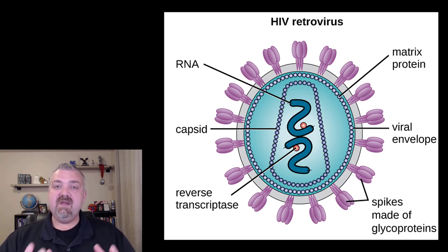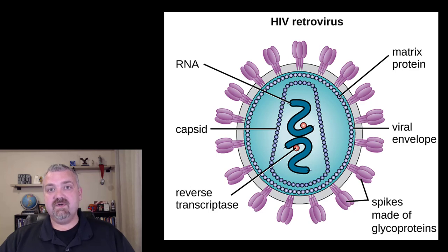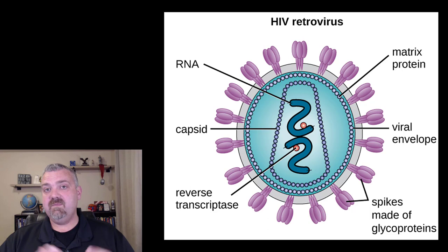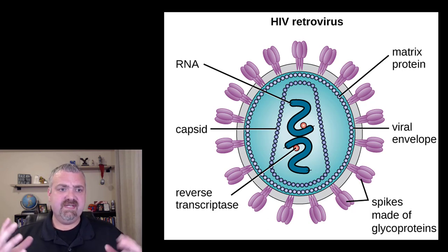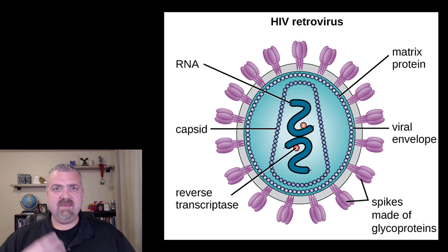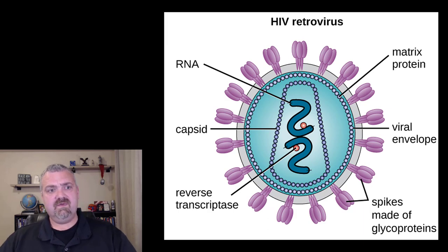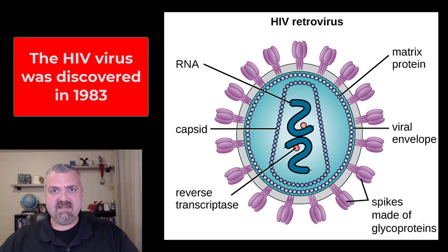You can make an argument for why it showed up in this population first. Anal receptive sex is the easiest way to transmit the disease, but certainly not the only way. So in 1981 you're seeing these seemingly unhealthy men with eradicated immune systems, and then by 1983 they had already discovered the virus.